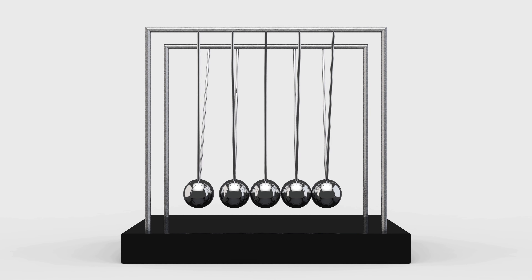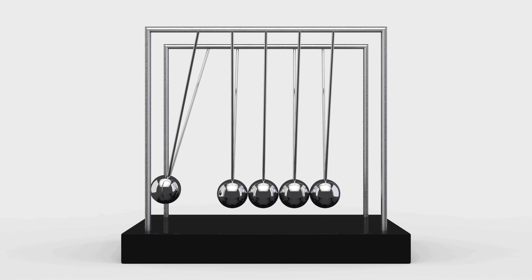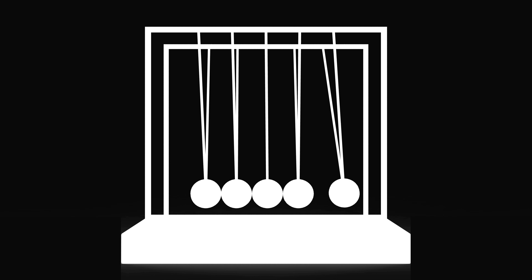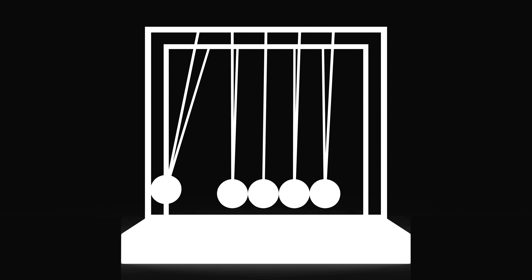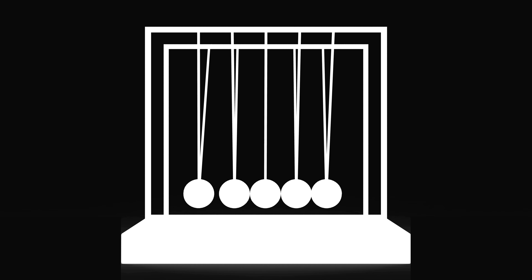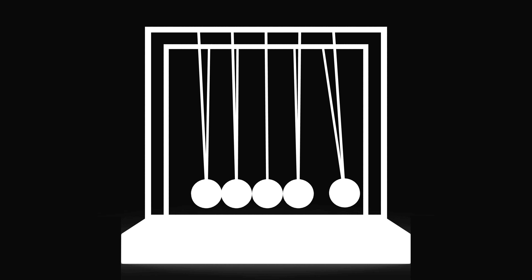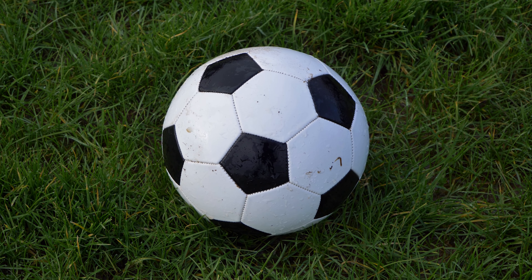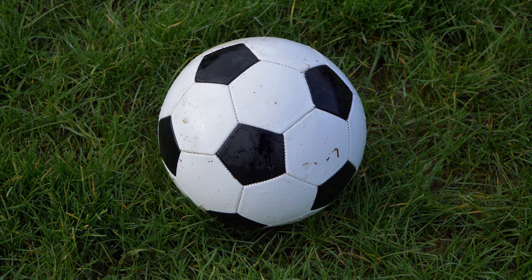First we will discuss about the first law of motion. It states that an object at rest remains at rest, or if in motion, remains in motion at a constant velocity, unless acted on by a net external force. What does it mean? If an object remains at rest or in motion, it means if it is moving, it will still go on moving, or will be at rest, unless another force is working on that object.